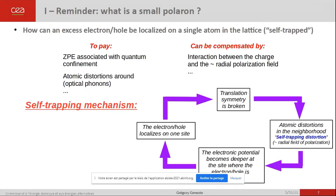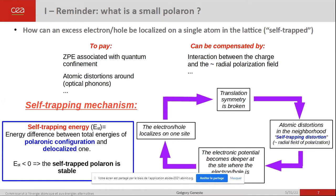This process is called the self-trapping mechanism and can be described as a kind of self-consistent loop. You force the charge — electron or hole — to be localized on one atom. As a consequence, this breaks the translational symmetry of the crystal and creates atomic distortions all around because the matrix is polarizable. This field of radial polarization creates an additional electrostatic potential on the site where the charge is localized, making the electronic potential felt by this additional charge deeper at that site, enforcing the localization. This process can be quantified by the so-called self-trapping energy, defined as the difference between the total energies of the fully optimized polaron configuration and that of the localized one. If it is negative, the self-trapped polaron is stable.